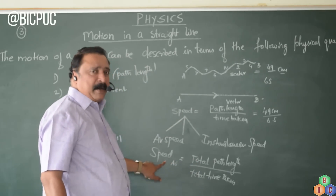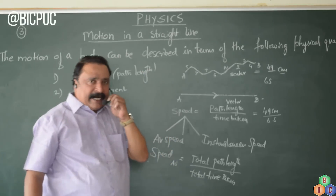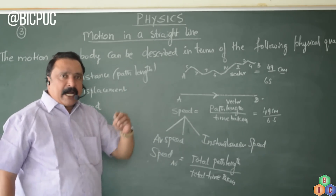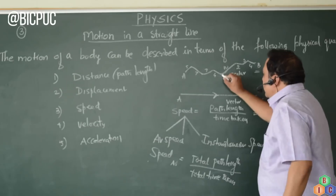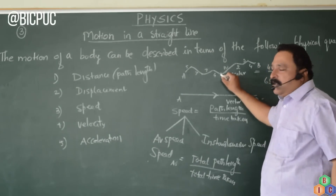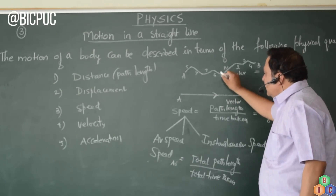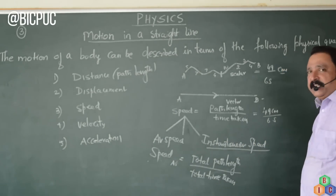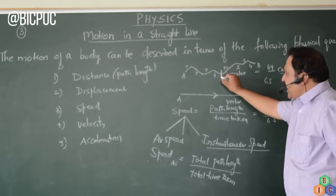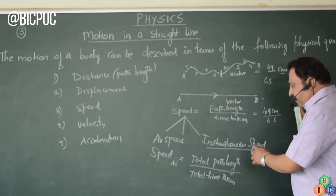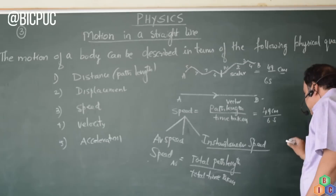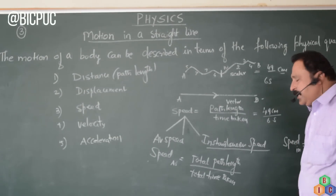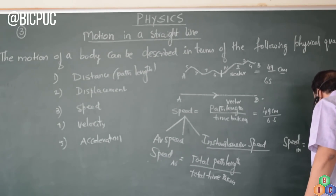Average speed cannot tell us how fast or with what speed a body is moving at a particular instant. So we define instantaneous speed. Instantaneous speed, as the name indicates, is the speed of a particle at any instant of time. It is given by the formula dx by dt.